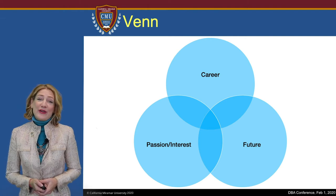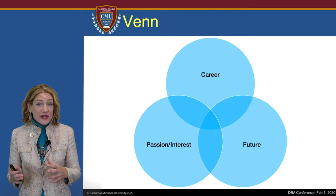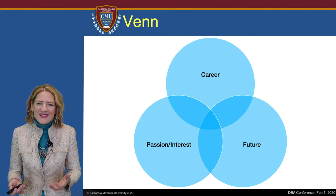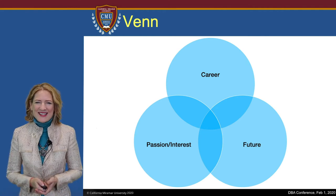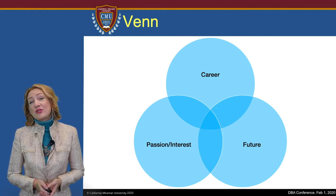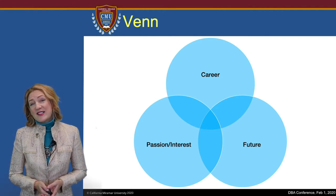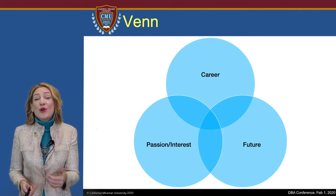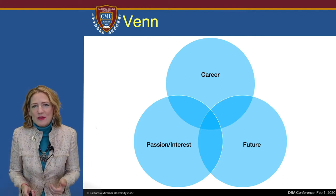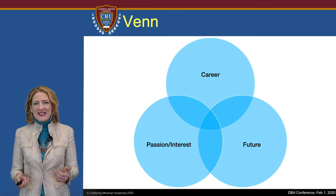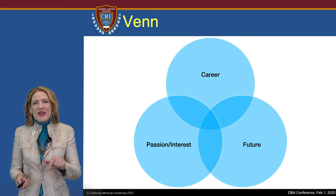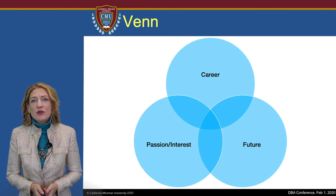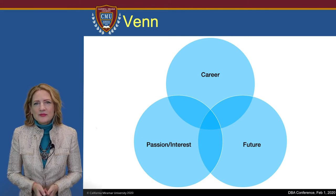A third Venn diagram sphere — there could be more than three, but for the simplicity of this recording, it's just three — think about your future. The future doesn't exist yet; you're building it, you're creating it. It's not a known commodity. That's a big question mark in that sphere, but what do you envision for the future?